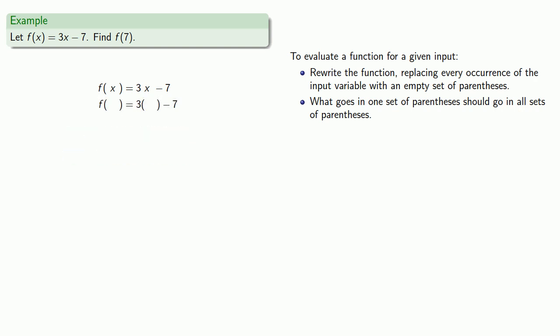Now we want f of 7, and so that means we want a 7 inside this set of parentheses. So we'll put it in. But what goes in one set of parentheses should go in all sets of parentheses. So that means in this set of parentheses, we should also have a 7. So we'll write one in, and we can compute this value to get our actual function value.